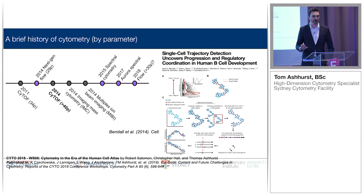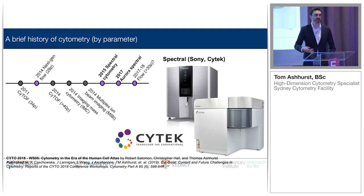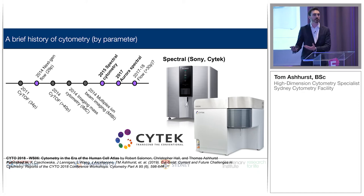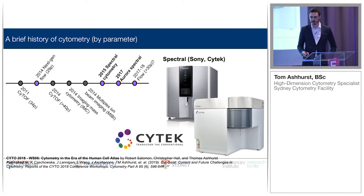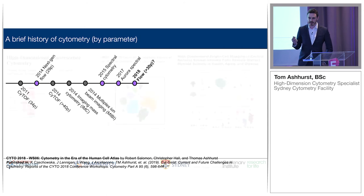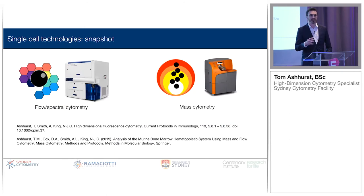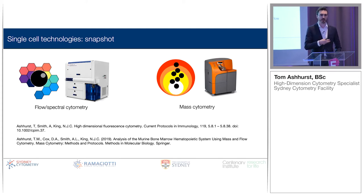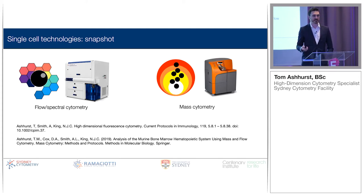We had a little back and forth — mass cytometry got a bit bigger, then flow got a little bit bigger, then spectral came into play. It's an interesting history where each technology forces the other to innovate, otherwise you fall behind. Alongside all this is a technology area we often ignore if we come from cytometry or immunology, which is the single-cell sequencing space.